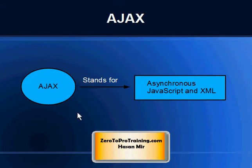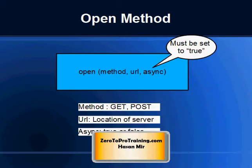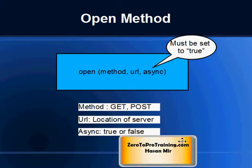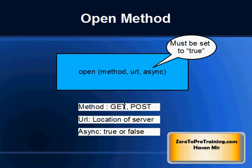As we already know, Ajax stands for Asynchronous JavaScript and XML. That means being asynchronous is important in the Ajax world. For the XMLHttpRequest object to behave as Ajax, the async parameter of the open method has to be set to true.